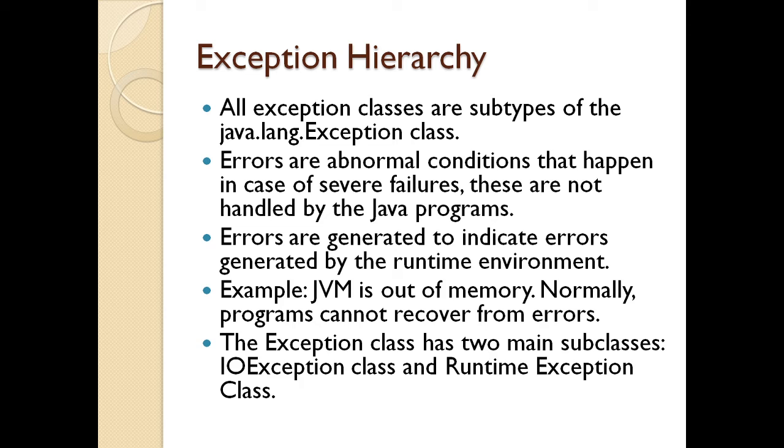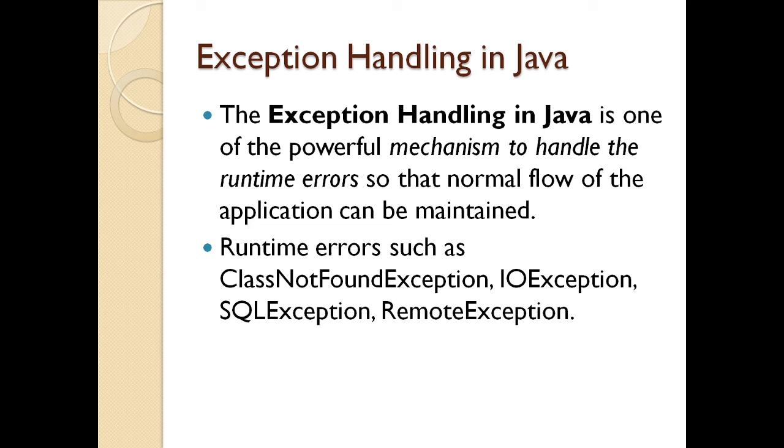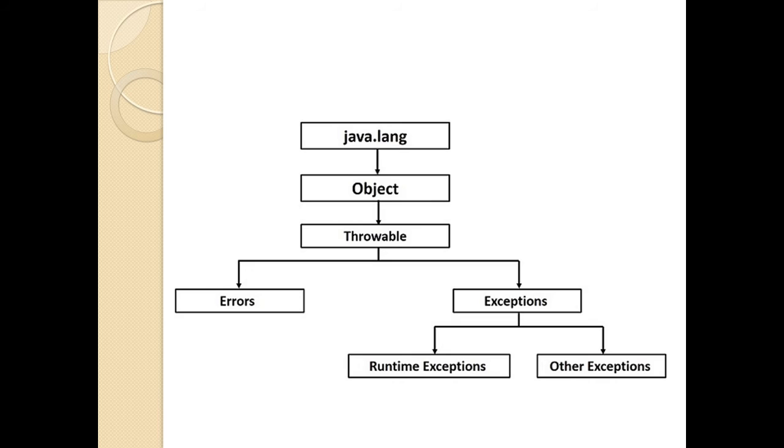So when you start executing a program or start writing the program, you need to import the exception class as your first line. Now errors are abnormal conditions that happen in case of severe failures that are not handled by Java program. Errors are generated to indicate errors generated by the runtime environment. For example, JVM is out of memory. Normally programs cannot recover from such errors. The exception class has two main subclasses, the IOException class and the RuntimeException class. Now we have seen that when error occurs, we need a special mechanism to handle that. The exception handling mechanism in Java is one of the powerful mechanisms to handle the runtime error so that the normal flow of the application can be maintained. Now runtime errors can be ClassNotFoundException, IOException, RemoteException or the SQLException. We are going to do all these exceptions in detail when we do the practicals in Java program.